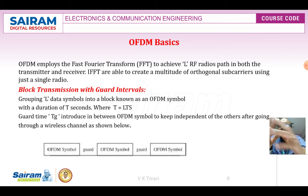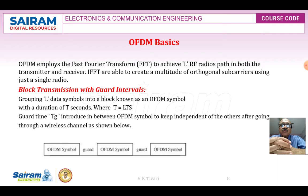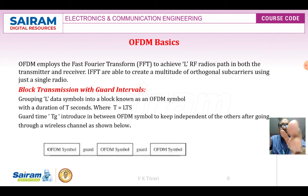OFDM implies a fast Fourier transform to achieve the multi-path processing at both the transmitter and receiver. The IFFT is able to create a multitude of orthogonal subcarriers using just a single radio. FFT and IFFT are used at the transmitter or receiver for coding or decoding. In block transmission with guard intervals, L data symbols are grouped into a block known as an OFDM symbol with duration T seconds, where T equals L multiplied by TS.